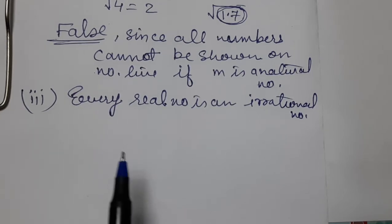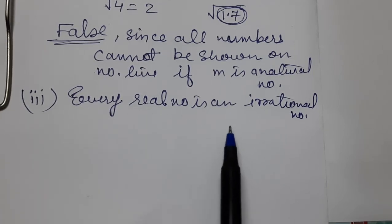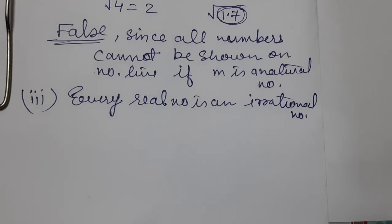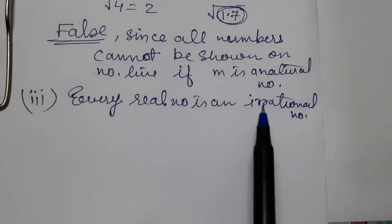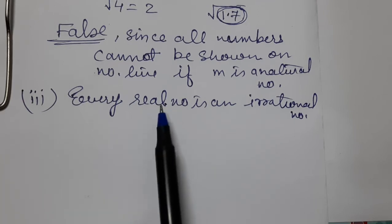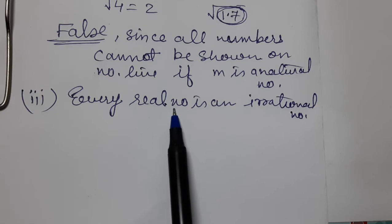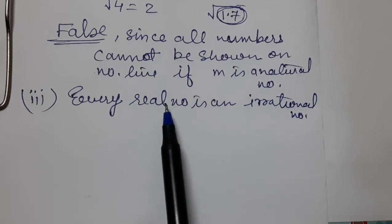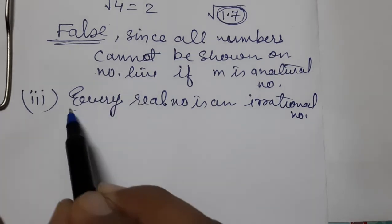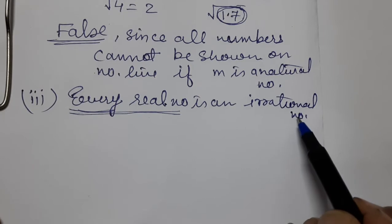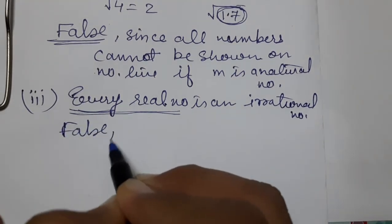Now see the third one — FALSE. Every real number is an irrational number. We discussed in the first question that every irrational number is a real number. But the converse is not true. Not every real number is irrational, because real numbers also include rational numbers.